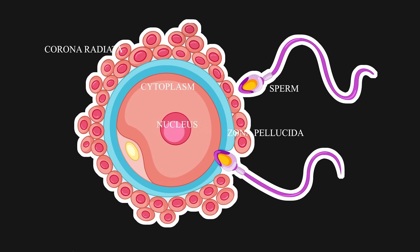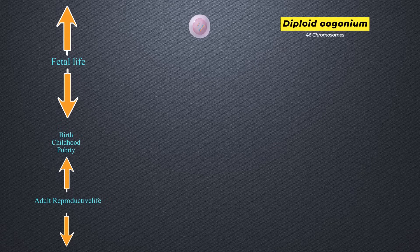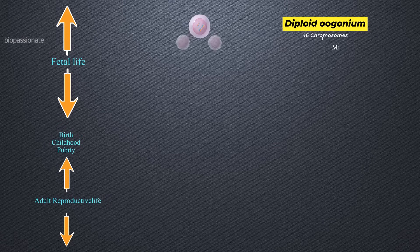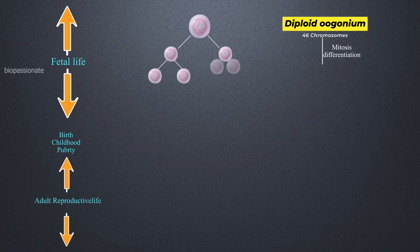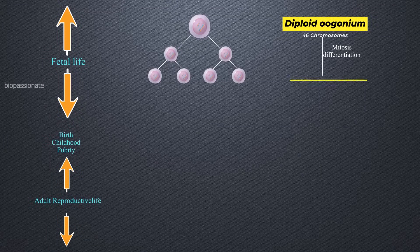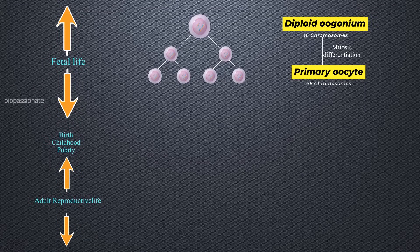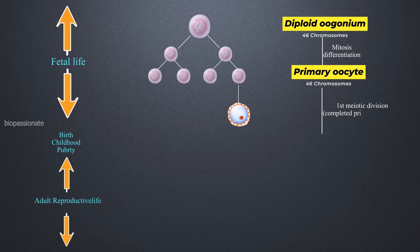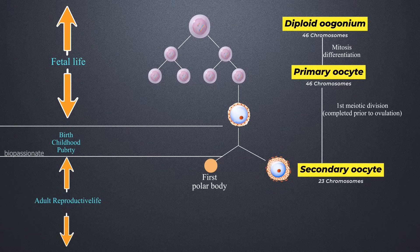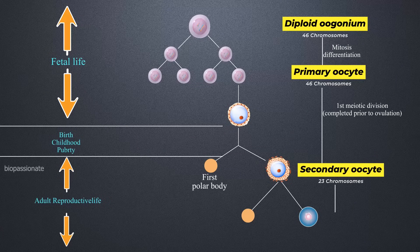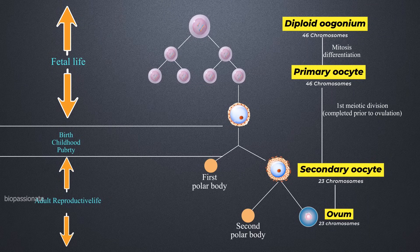For better understanding, here is the schematic representation of oogenesis. A diploid oogonium undergoes mitosis and differentiation to form a primary oocyte. The primary oocyte completes the first meiotic division before ovulation and produces a secondary oocyte. The secondary oocyte is then transformed into a mature oocyte, or ovum, which is haploid.